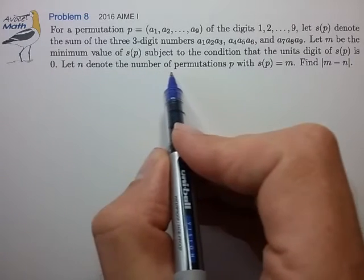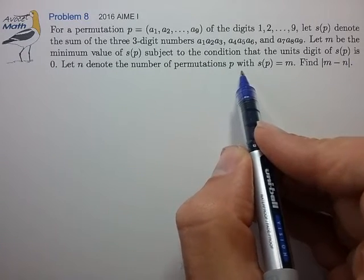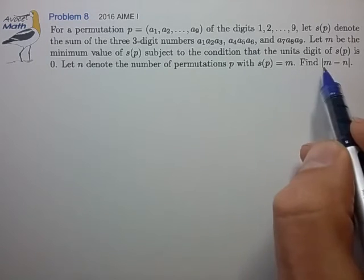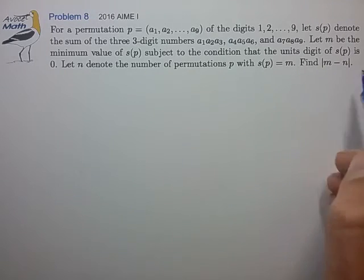Let n denote the number of permutations p that satisfy that condition, and let's find |m - n|, absolute value.